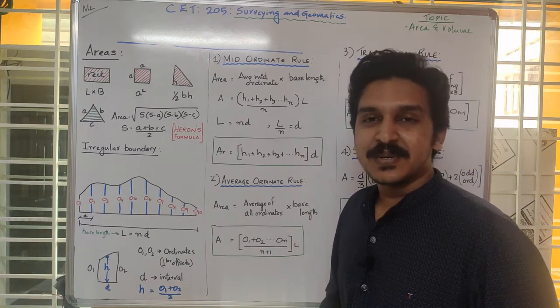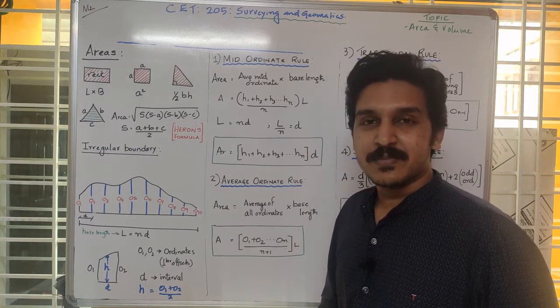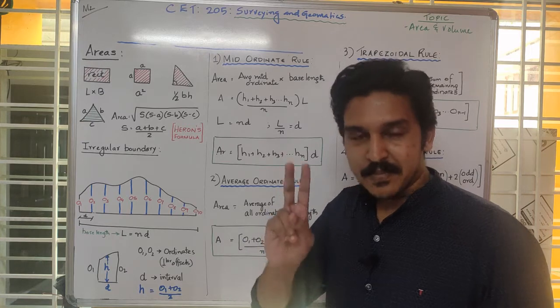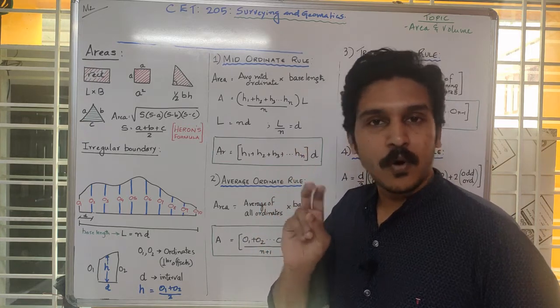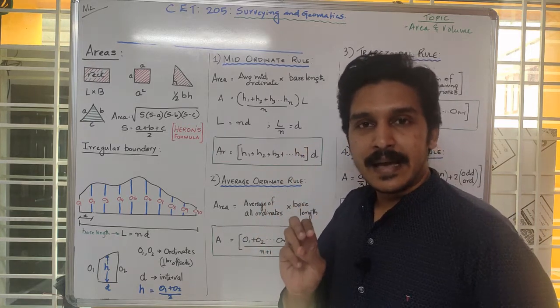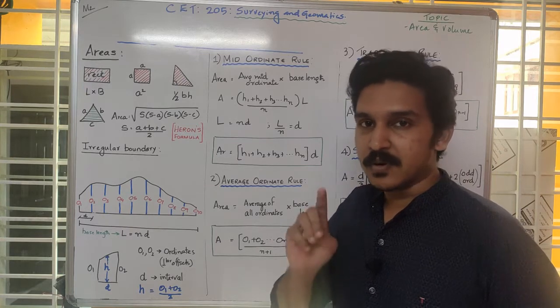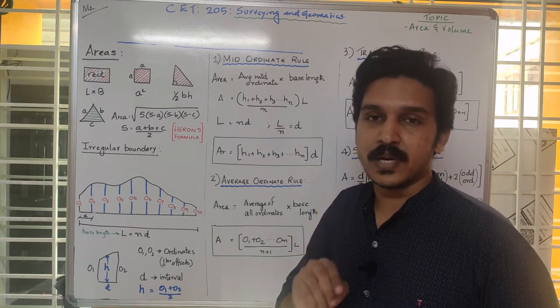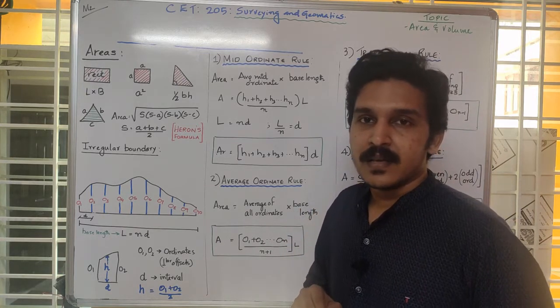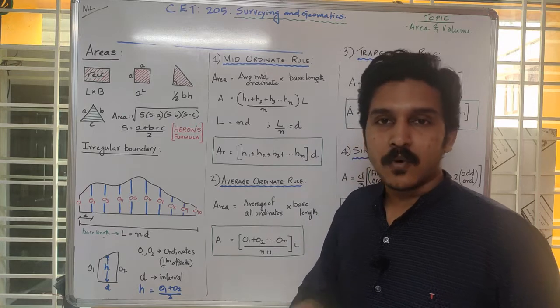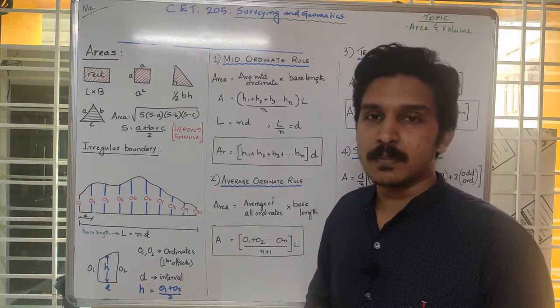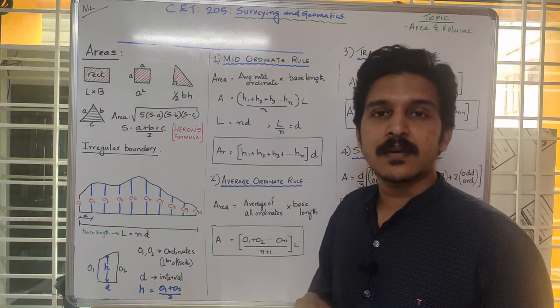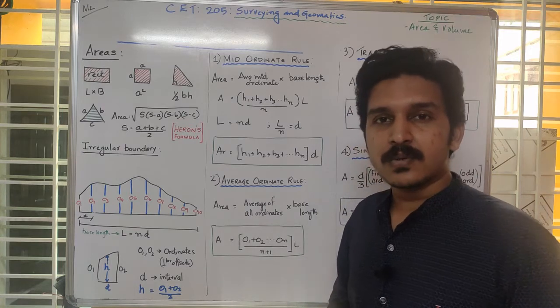In this video on surveying and geomatics, we will talk about the second module, which covers areas, volumes, and triangulation surveys. We will also talk about what is a theodolite. In this video, we will cover what are areas, the various formulas available for finding areas, and also work through a small problem.